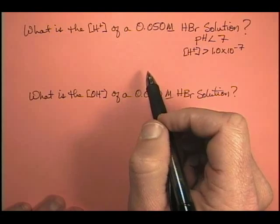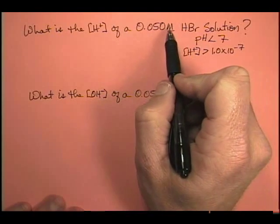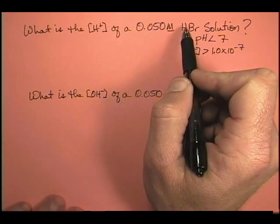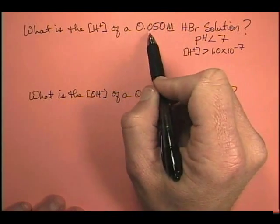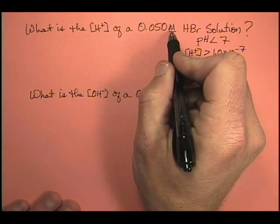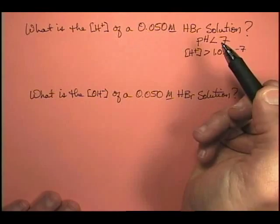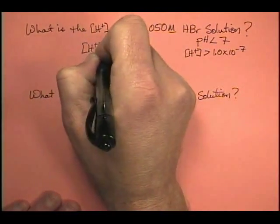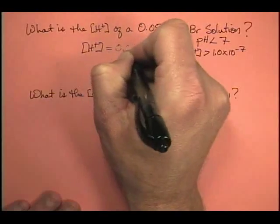But this problem is actually pretty easy. Because if we remember, the concentration of the acid, the kinds of acids that we'll see in this class, is also the concentration of the hydrogen ion. So this is 0.050 molar HBr solution, so our hydrogen ion concentration is 0.050.